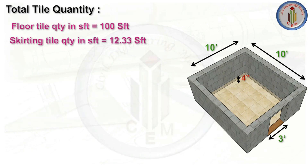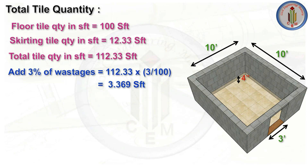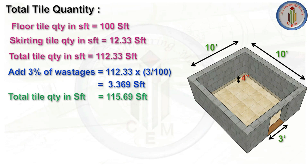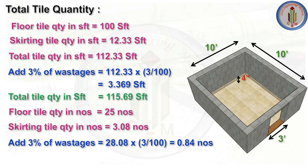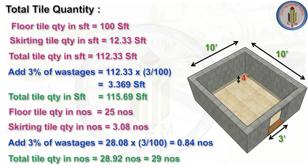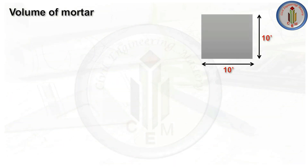Total tile quantity summary: floor tile area = 100 sq ft, skirting tile area = 12.33 sq ft, total = 112.33 sq ft. Adding 3% wastage for breakage and cutting = 3 sq ft extra, giving a total of 115.69 sq ft. In numbers: floor tiles = 25, skirting tiles = 3.08; adding 3% wastage gives a total of 29 numbers of tiles.